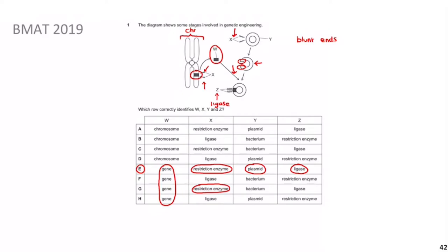What you actually want are sticky ends. A sticky end has a region of single-stranded DNA on each side, rather than a clean straight cut. When you use the same restriction enzyme to cut out the gene from the chromosome, the sticky ends fit together like a puzzle piece — the complementary single-stranded regions hydrogen bond neatly to each other.